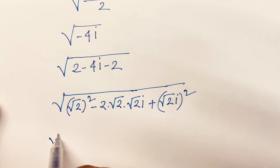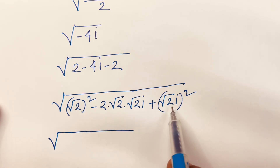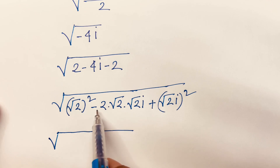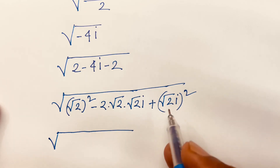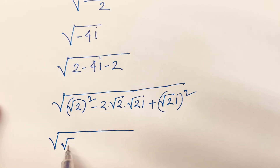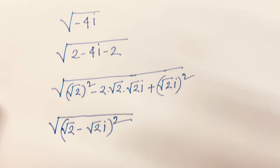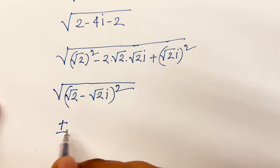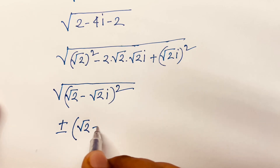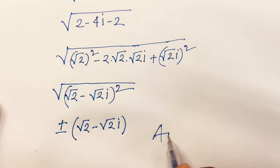Now, I can say here is square root. Look, if you think of it as a and b, then we have a squared minus 2ab plus b squared — we know that is a minus b whole square. So here is square root 2 minus square root 2 times i, whole squared. Then the square root is cancelled, and we find our final answer: plus or minus square root 2 minus square root 2 times i.